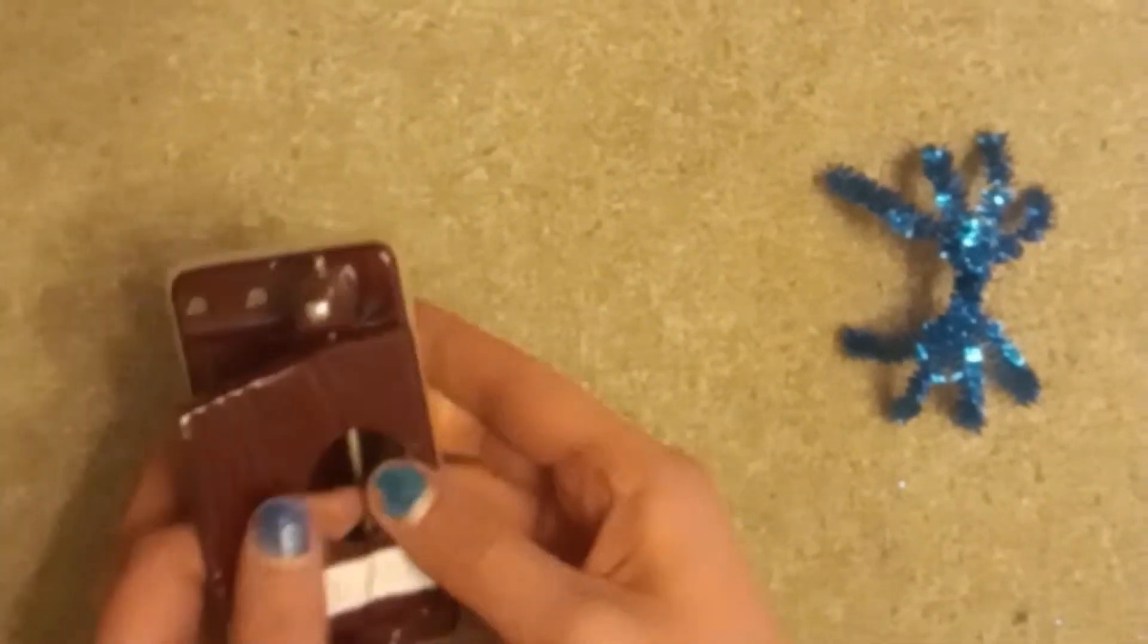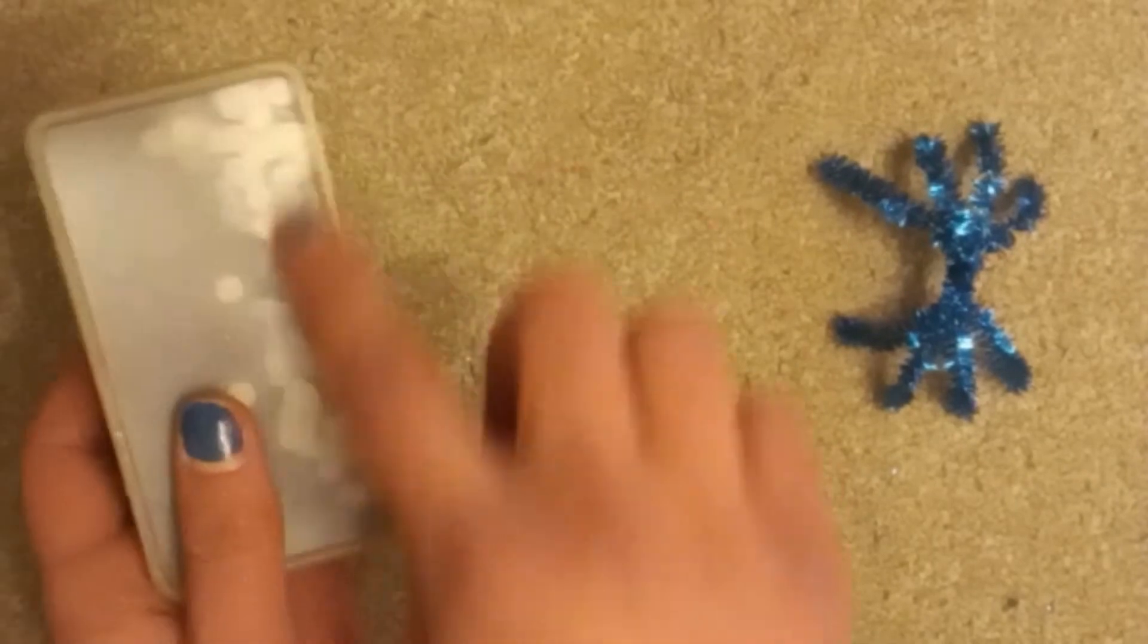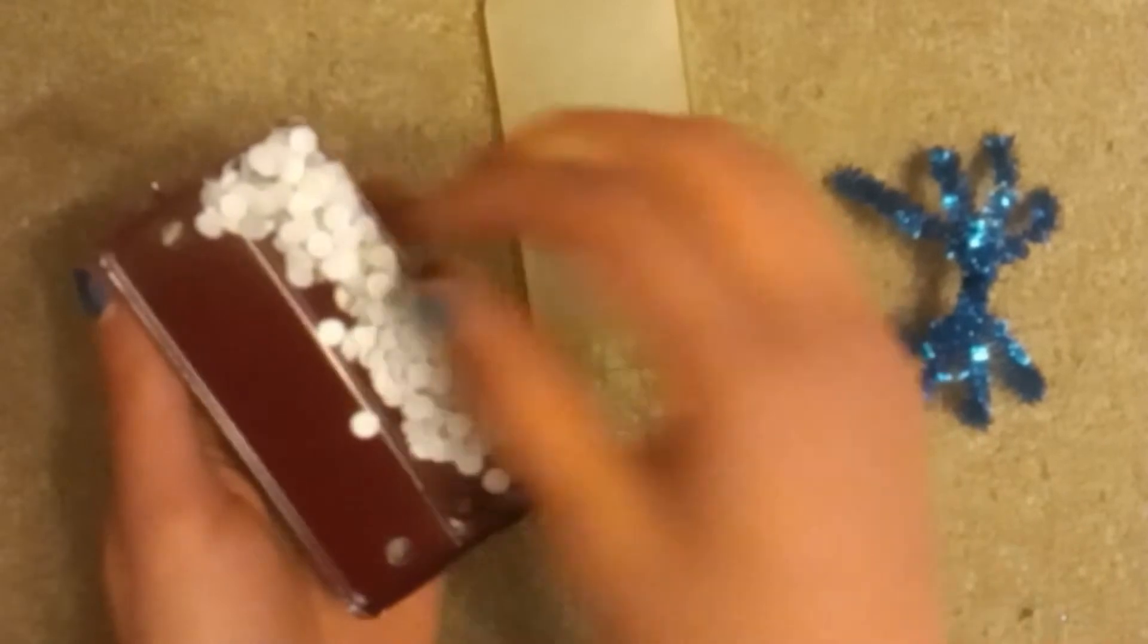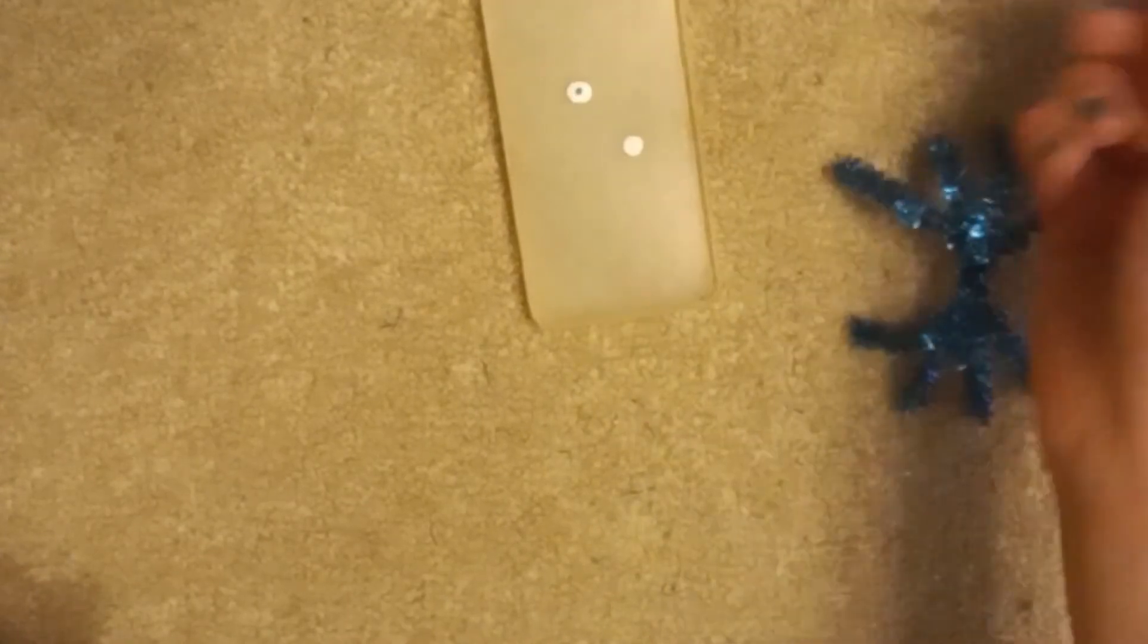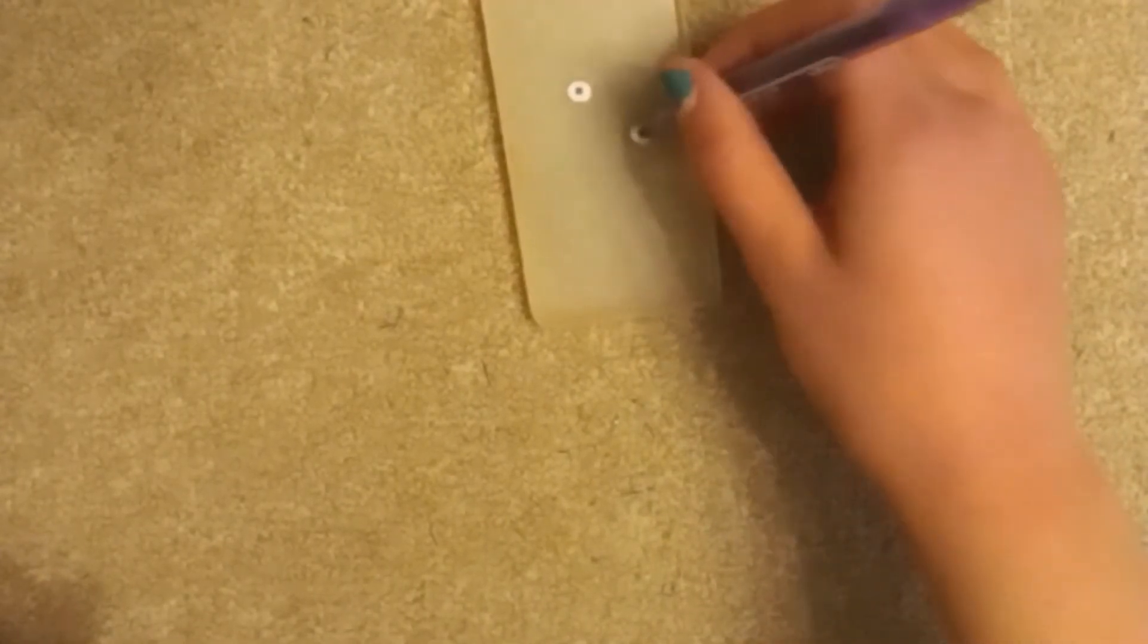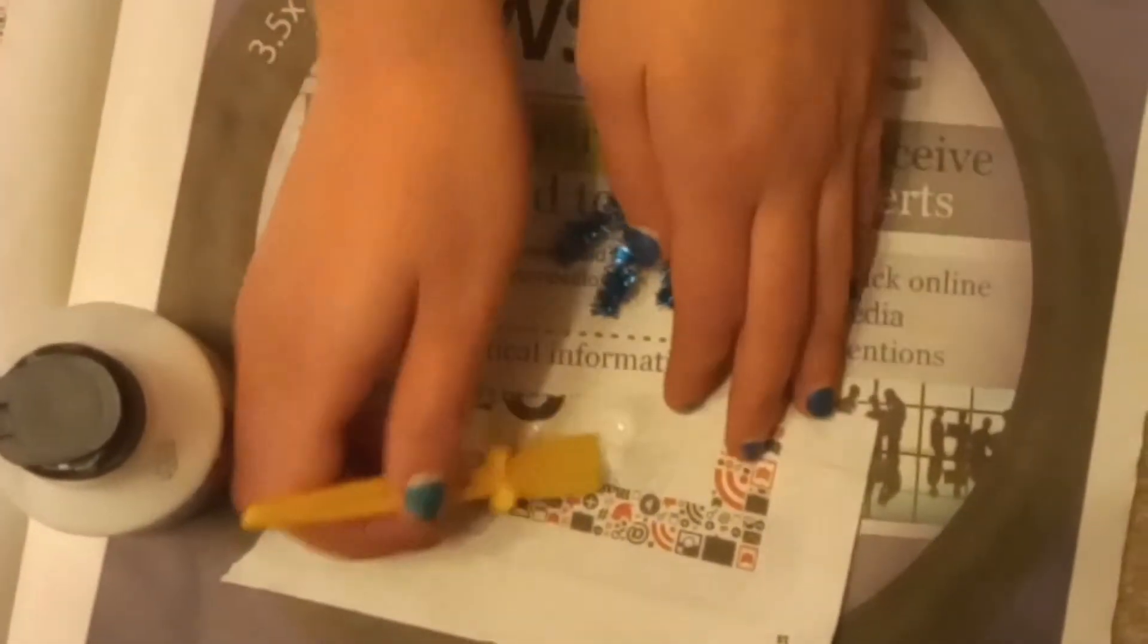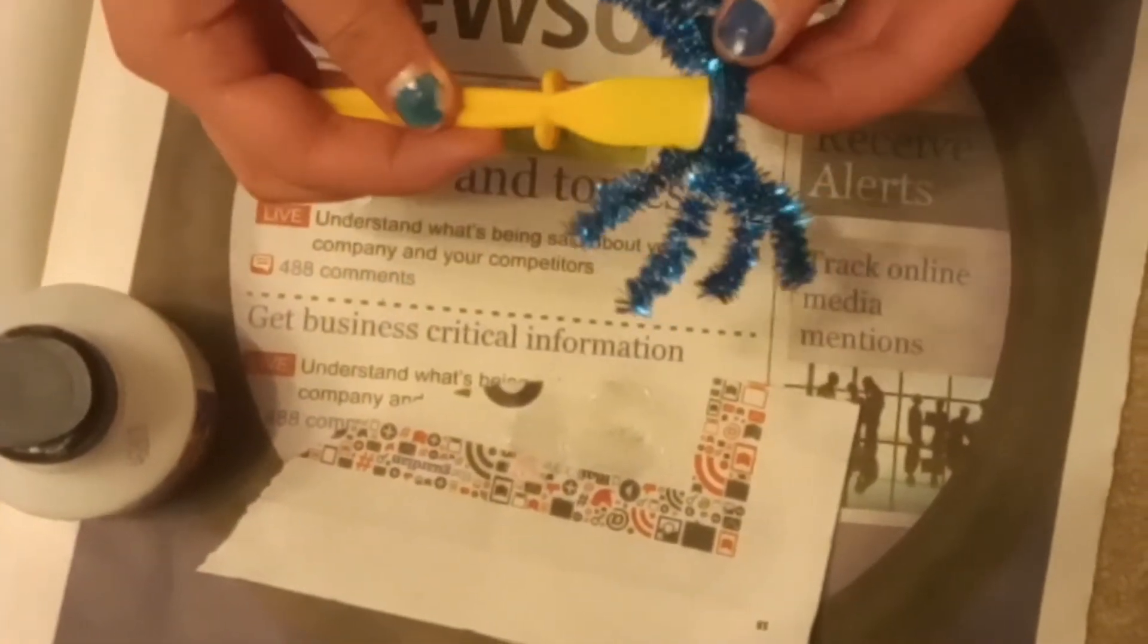Now we're going to make some spider eyes. You can use googly eyes or if you have a hole punch you can use these little circles inside. Be very careful not to spill them everywhere though. You can take them and colour in the middles with a pen to make the pupils. Now I'm going to use some PVA glue to stick on the eyes. You've got to be really careful with this part and you might want an adult to help you.